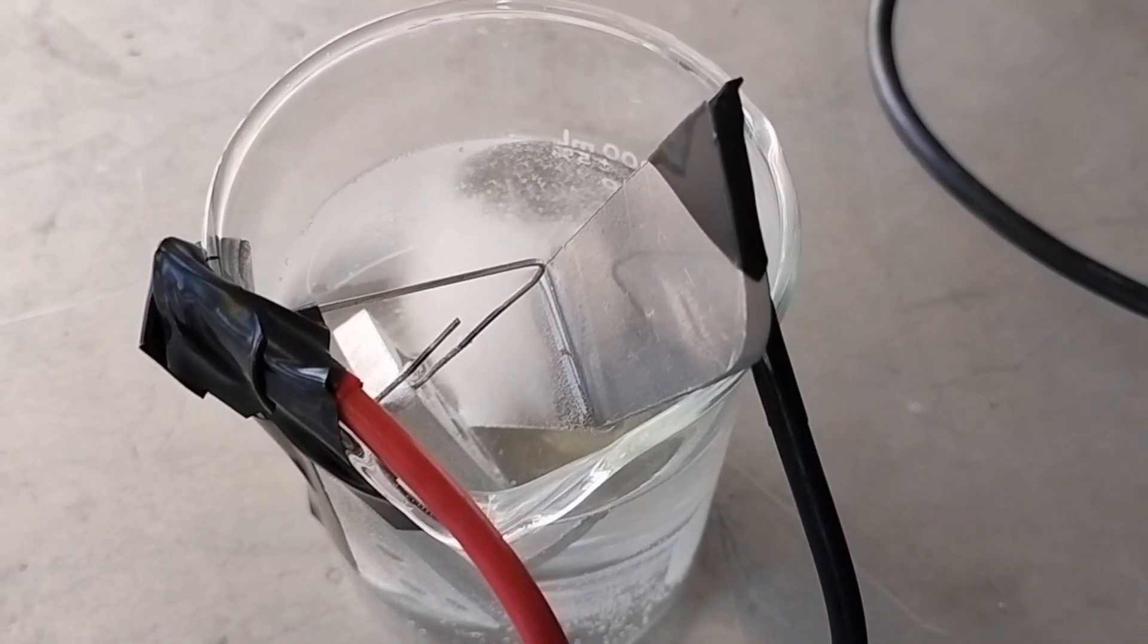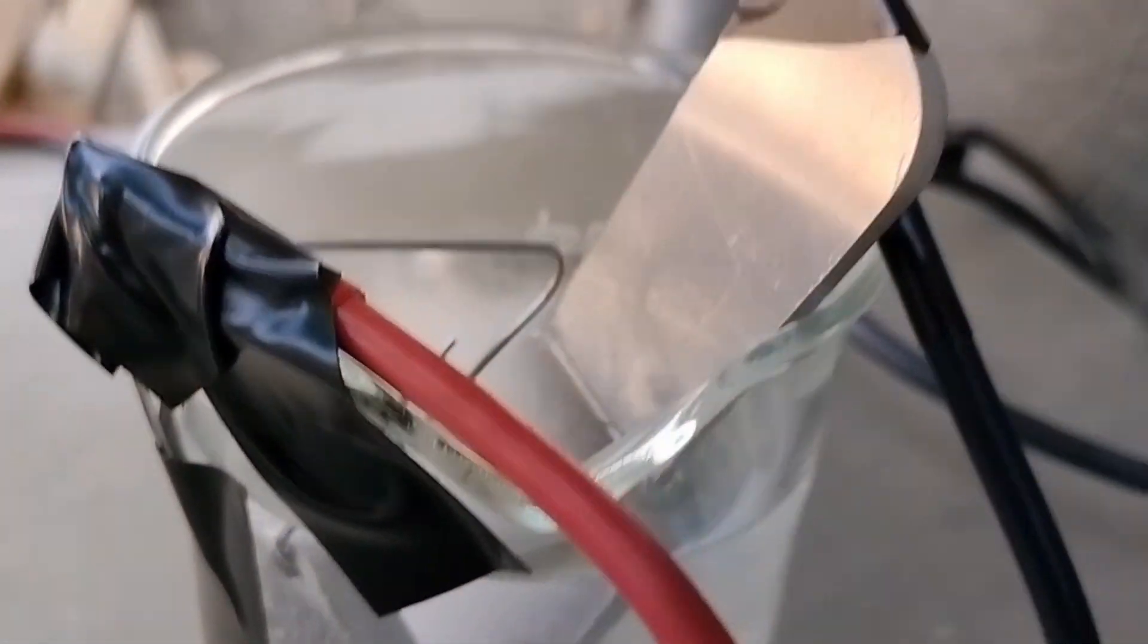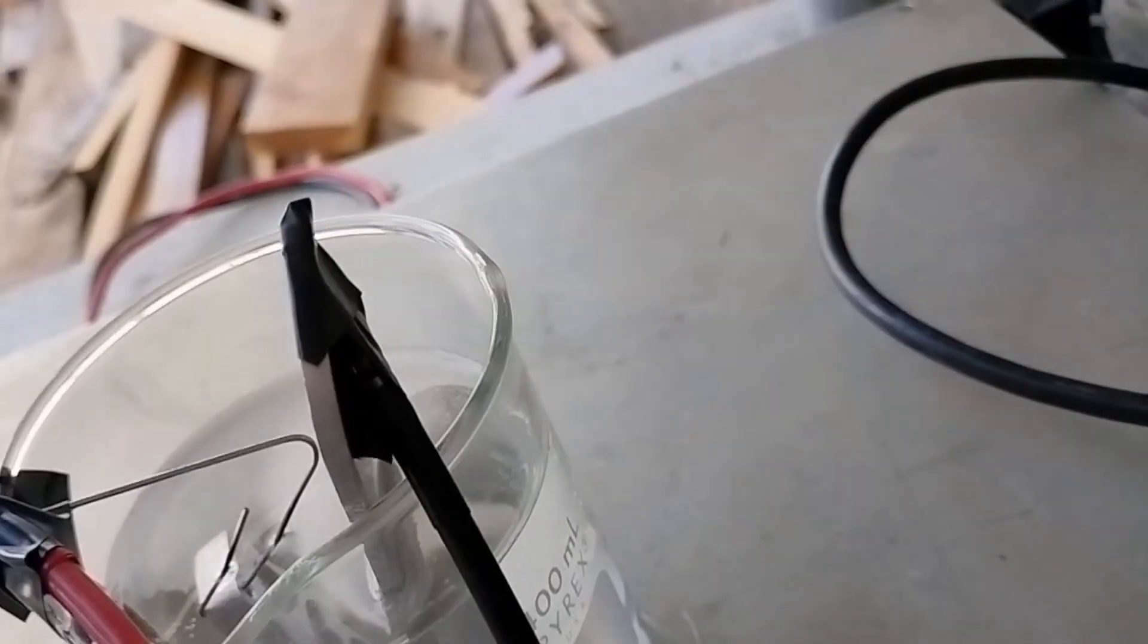Afterward, I linked up the sacrificial cathode and anode to the power supply. I chose to use an aluminum cathode instead of lead because lead is poisonous, and the robotics machine shop has plenty of scrap aluminum.